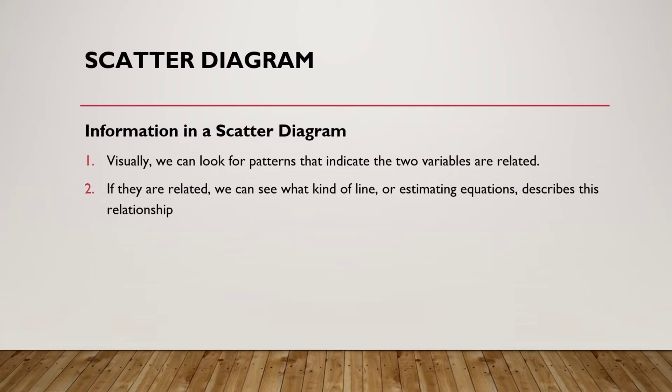The information we can get from a scatter diagram: first, we can visually look for patterns that indicate the two variables are related. Second, if they are related, we can see what kind of line or estimating equation describes this relationship.